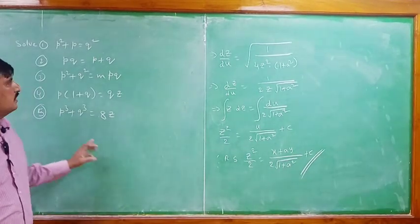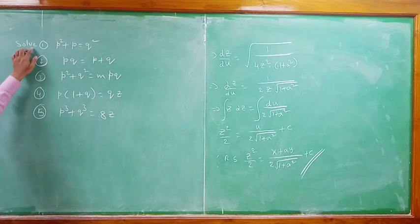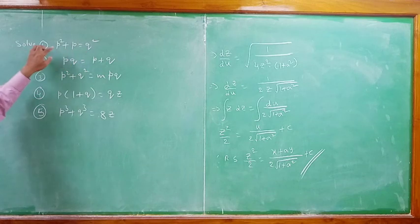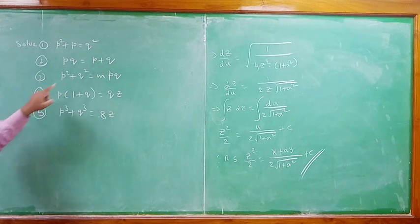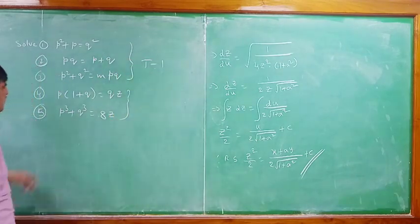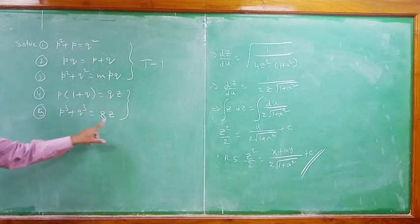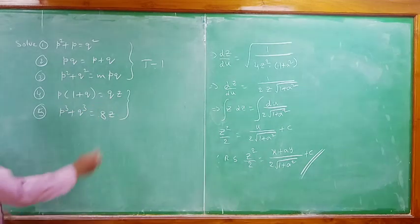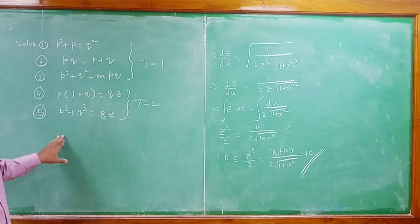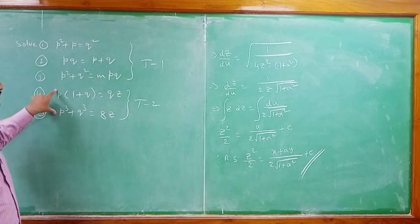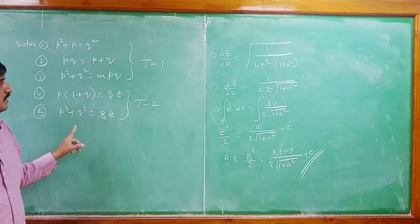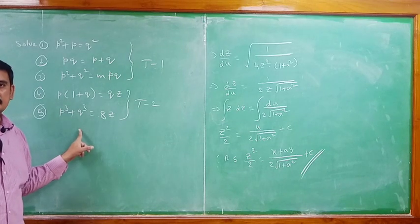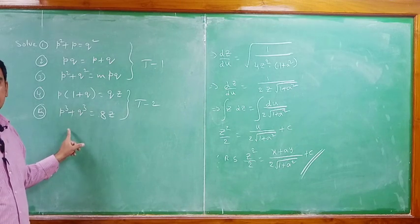We completed Type 1 and Type 2. For homework: solve P² + P = Q² (Type 1), and two Type 2 problems. Send me an email if you have any doubts. We will continue with Type 3 and Type 4 in tomorrow's class. Try to practice all the problems I am explaining every day. Thank you very much.